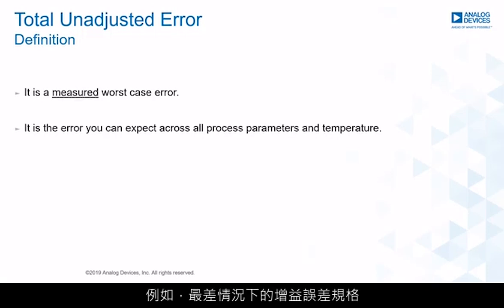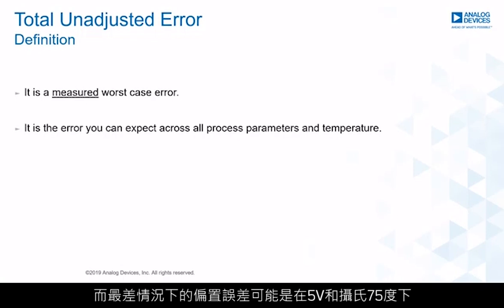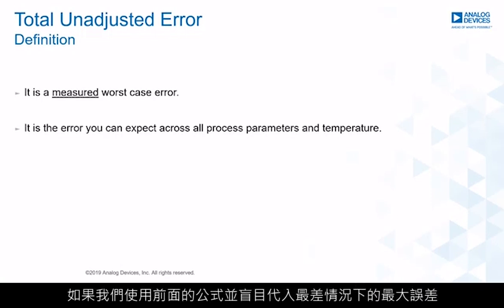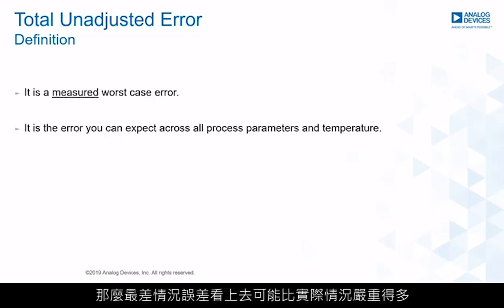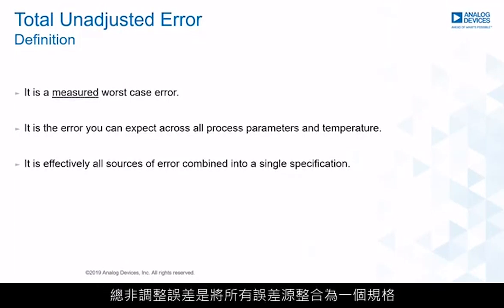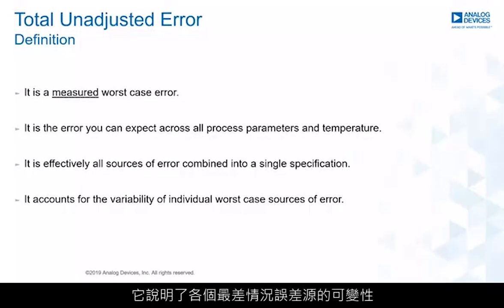For example, the worst-case gain error specification might occur at minus 40°C with a 3 V supply voltage, while the worst-case offset error might occur at 75°C at 5 V. If you insert the maximum worst-case errors blindly into the formula, the worst-case error might look far worse than it actually is. Total unadjusted error combines all sources of error into a single specification, accounting for the variability of individual worst-case error sources.